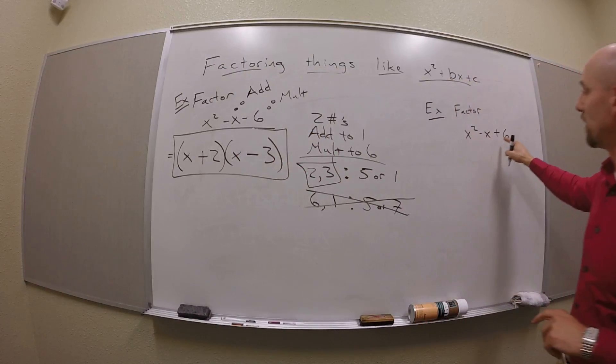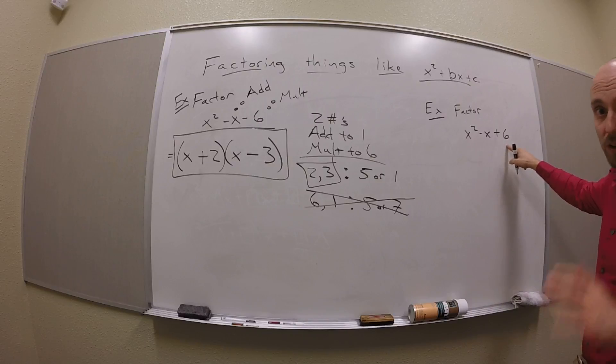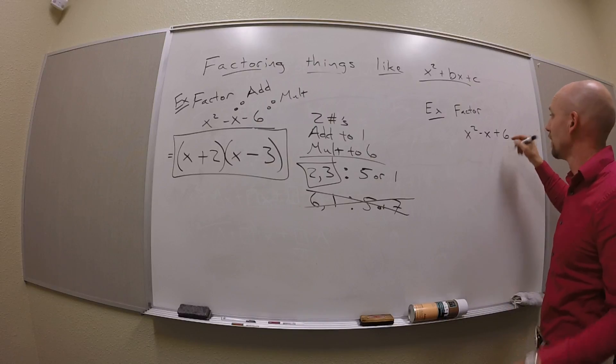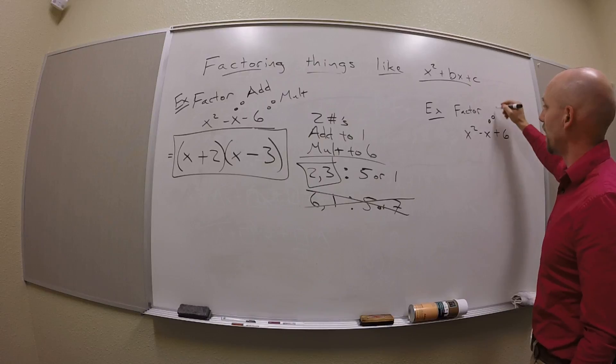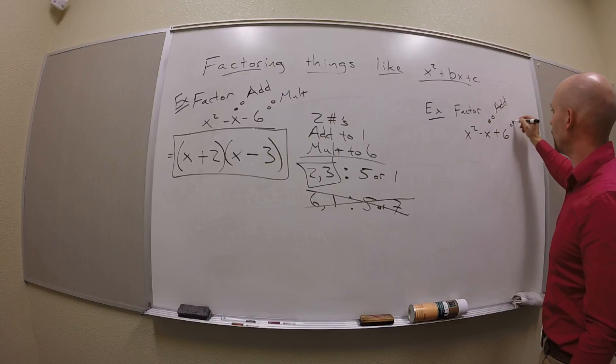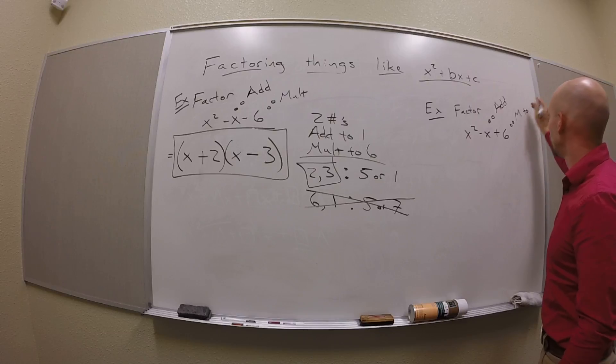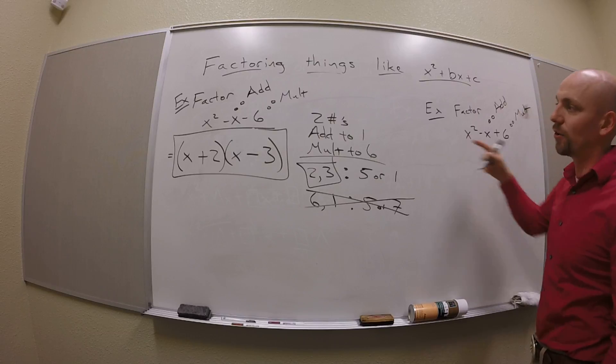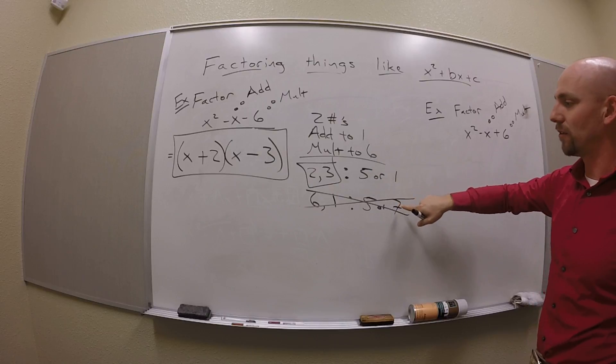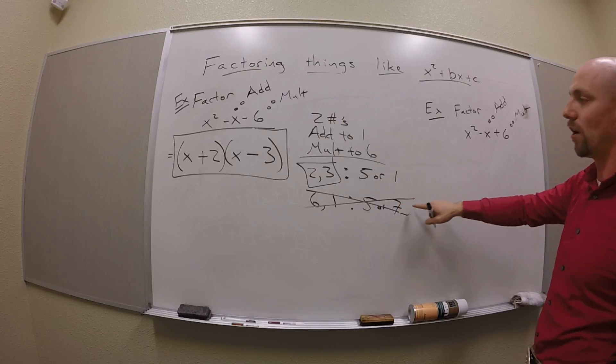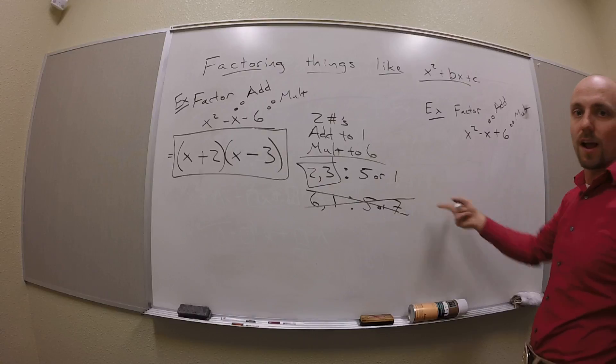Over here, I've got x squared minus x plus 6. That feels really similar, right? So on this one, I need to add to negative 1, and I need to multiply to 6. So I go through this same process with my numbers. 6 and 1 still don't work. 2 and 3 are still the jam I'm looking for.